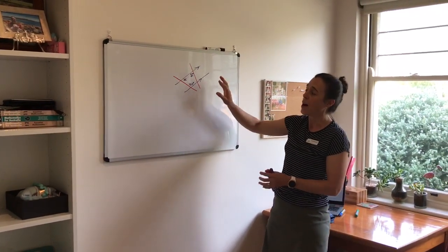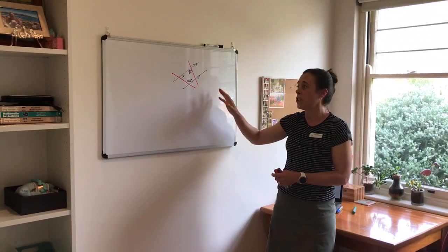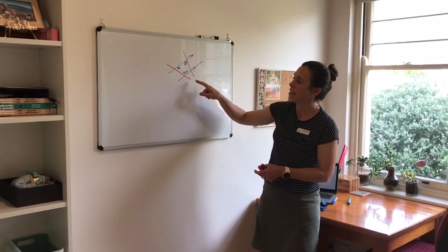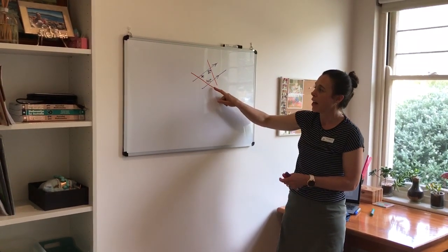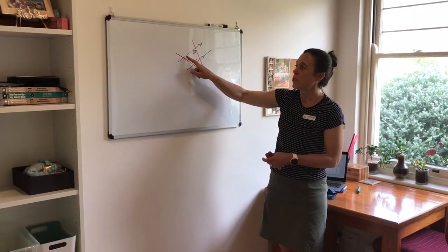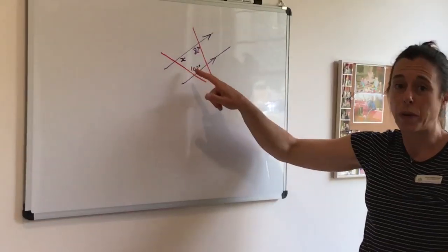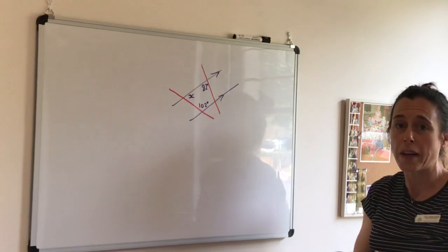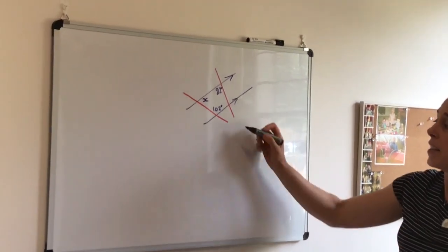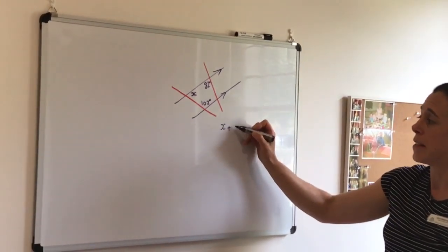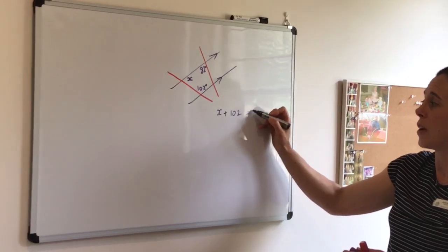So when we get presented with a problem like this, sometimes we have too much information, we need to ignore some of the information. Now in this scenario, I'm looking for a rule that I can use, and I can see that if I just look at this line here, these two angles are in the co-interior position. So I can use my co-interior rule that tells me that x plus 102 equals 180.